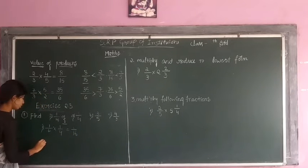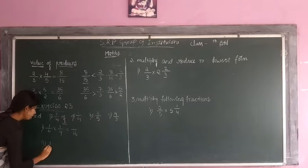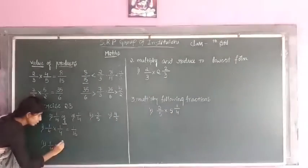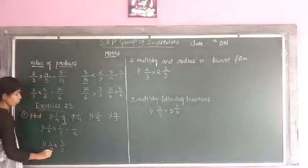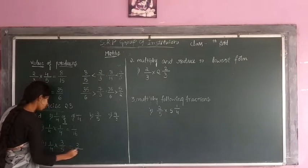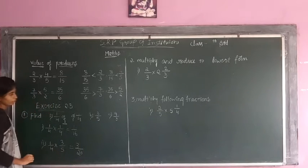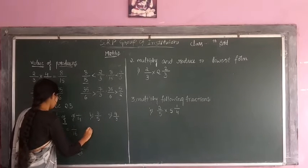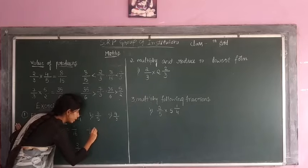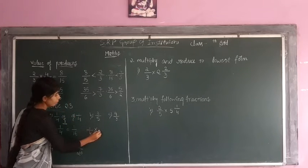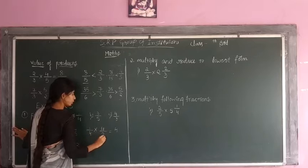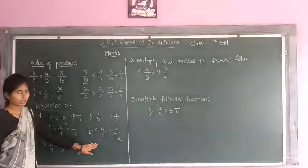Second one is 1/4 of 3/5. 'Of' means we replace it with a multiplication sign, so it becomes 1/4 into 3/5. Numerator into numerator and denominator into denominator gives 3 by 20. Third one is 1/4 of 4/3. That is 1 into 4 equals 4, and 4 into 3 equals 12, giving 4 by 12. This is the answer.